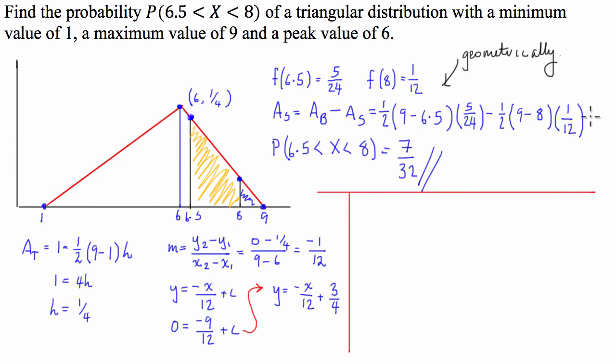So what we could say is to figure out the area of the shaded region here, we could just use the integral from 6.5 to 8 of f of x dx, which is equal to the integral from 6.5 to 8 of this function, negative x on 12 plus 3 quarters dx.